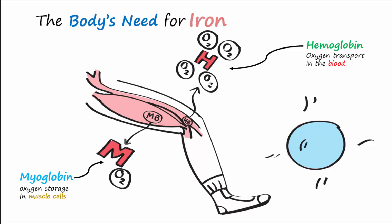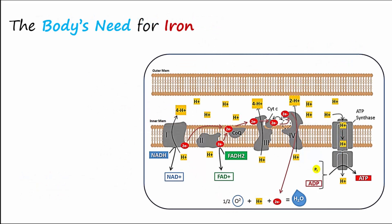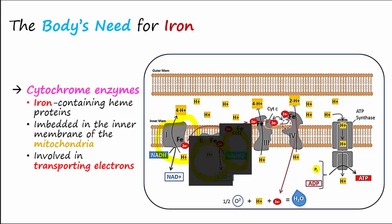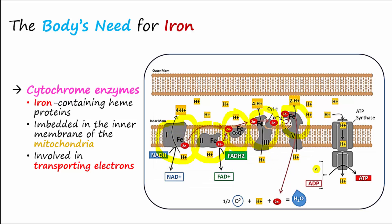Iron also is an important component of cytochrome enzymes that are iron-containing heme proteins. They are embedded in the inner membrane of the mitochondria and are involved in transporting electrons for the generation of ATP. Highlighted are some of the iron-containing cytochromes of the electron transport chain.